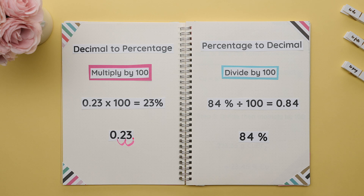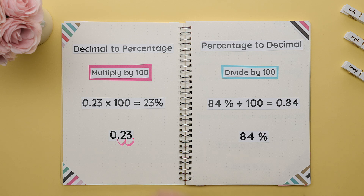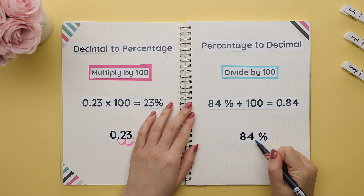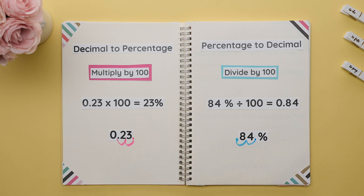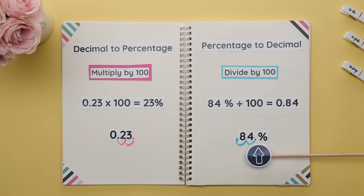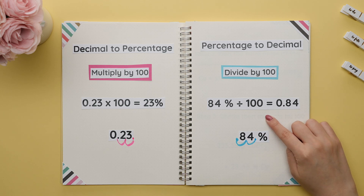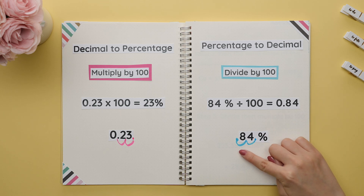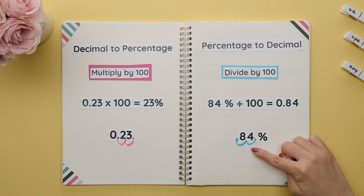To change a percentage into a decimal, you divide by 100. Again, instead of using a calculator, we can just move the decimal to the left two times. Recall that if a number doesn't have a decimal shown, it is always found at the very end of the number. Since there are two zeros in 100, this is why we move the decimal two times.